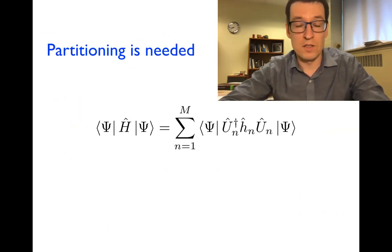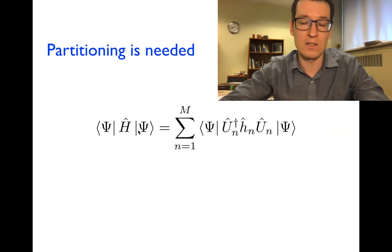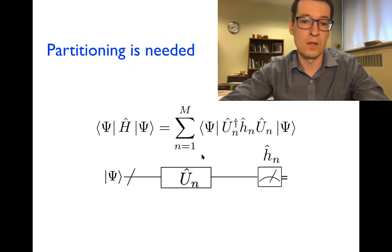Now, this is actually the reason why one can do somewhat a different scheme where we partition Hamiltonian into smaller pieces, where we can find the unitary that diagonalizes those smaller pieces. So following the same idea and using the linearity of the expectation value, we can partition the Hamiltonian into pieces where we can do this.